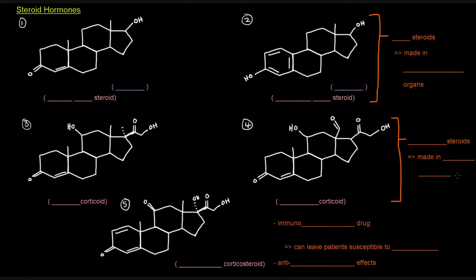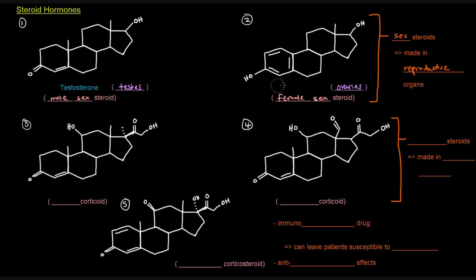Now, steroid hormones. These are the ones that a lot of people study. These first two are the sex steroids, and they are made in the reproductive organs. Over here I've drawn the male sex steroid, and over here the female sex steroid. The male sex steroid is made in the testes, and the female sex steroid is made in the ovaries. These two steroids are testosterone and estradiol.